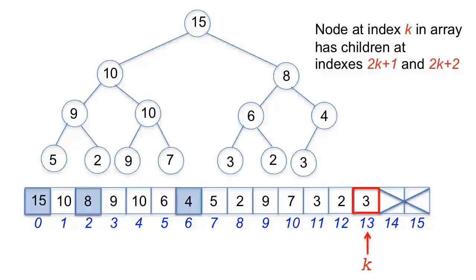In the next iteration, l is computed to be 2 times 13 plus 1, which is 27, outside the bounds of the array. This means the k item does not have a left child, which can only happen if it is at a leaf node. And this brings an end to the sift down process.